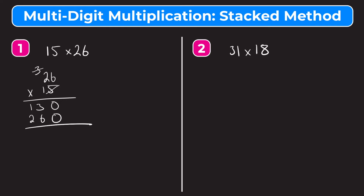To get our final answer, we just have to add these two together. So we have 130 plus 260. Adding down: 0 plus 0 is 0, 3 plus 6 is 9, and 1 plus 2 is 3, making our final answer 390. So 15 times 26 equals 390.